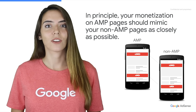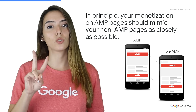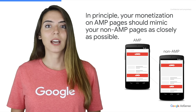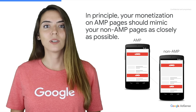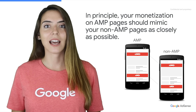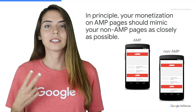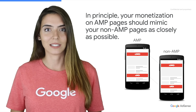In AdSense, you can generate AMP ads in two ways. First, AMP Autoads, which is the easiest and fastest method. Second, Manual AMP Ad Units.